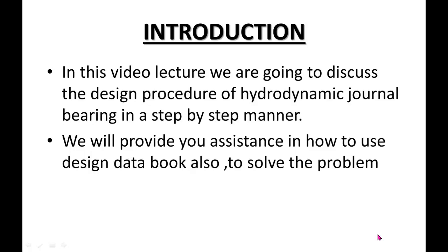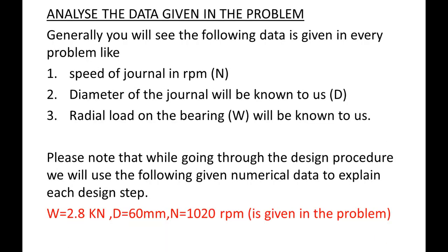Today we are going to see the steps involved in the design procedure of journal bearing. In problems of journal bearing, the following data is usually given to us: the radial load acting on the bearing denoted by W, the speed of the journal denoted by N, and the diameter of the journal denoted by D.